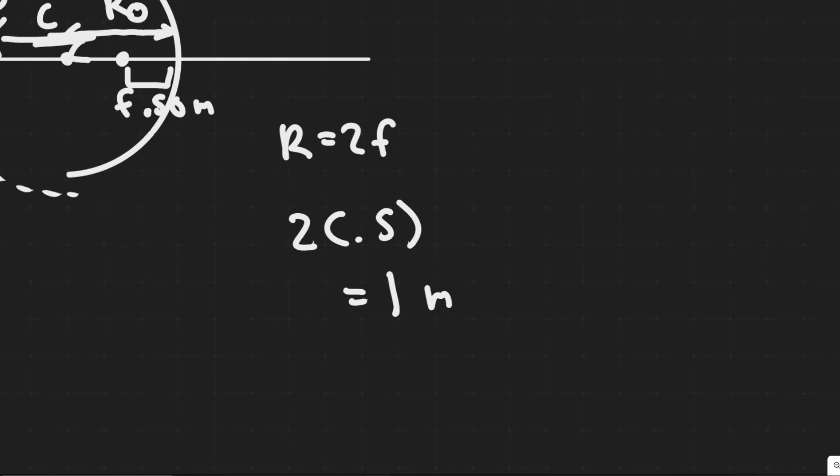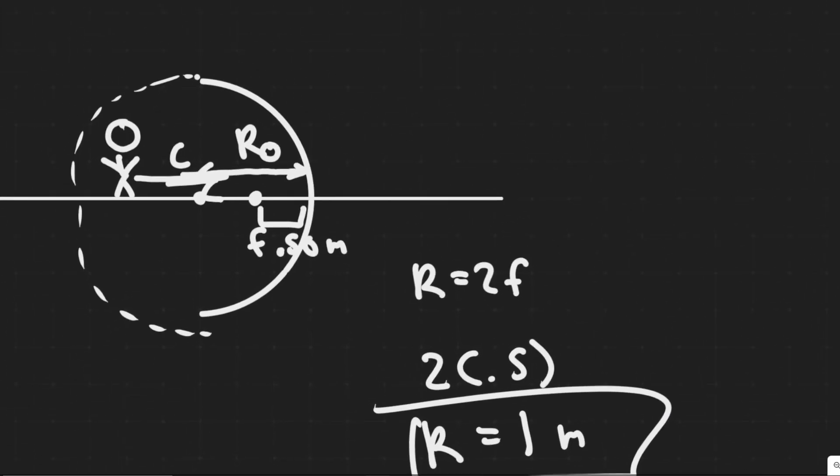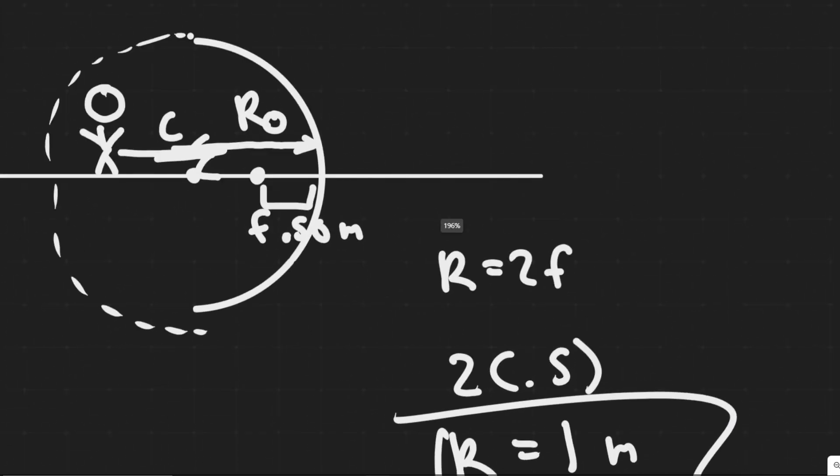So the radius of curvature of the mirror is 1 meter. This is going to be your answer. The main trick to this problem is just knowing that at the focal point is where your image flips for a concave mirror.